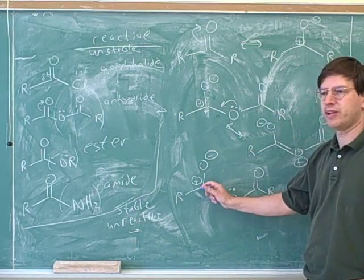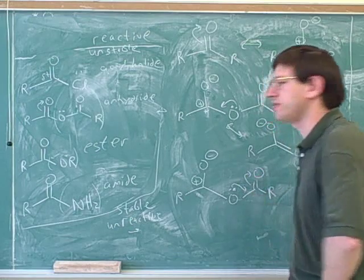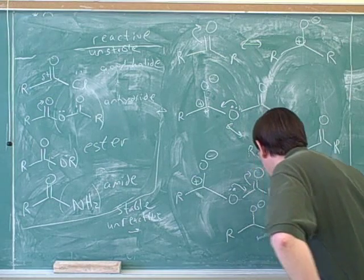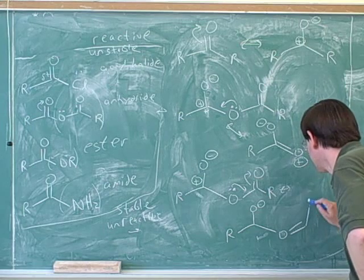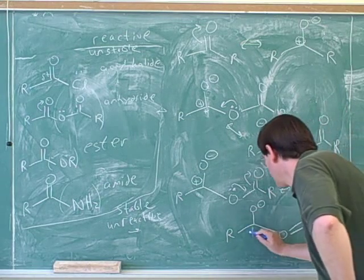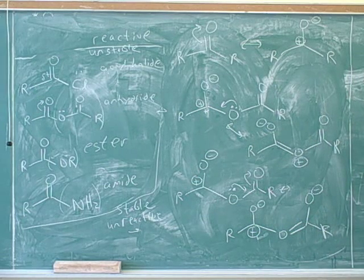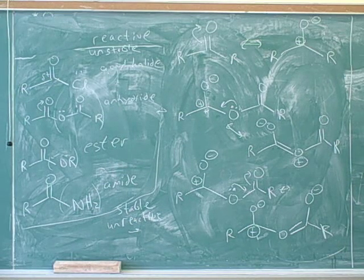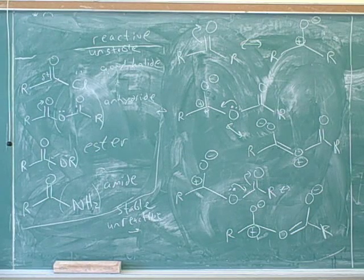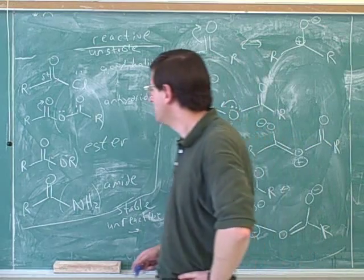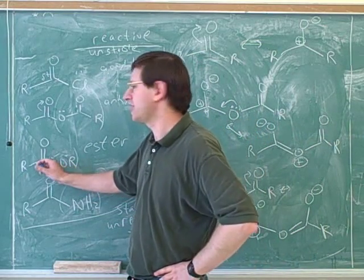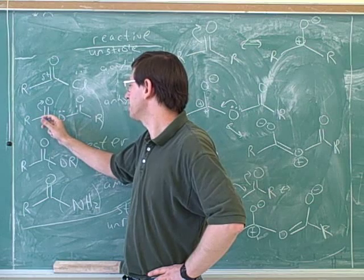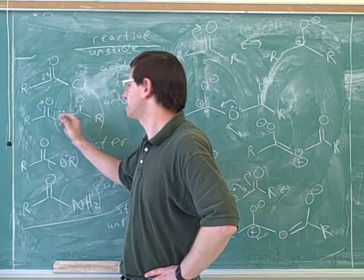So instead of donating electrons to the left to stabilize this positive charge, sometimes the oxygen is going to donate electrons to the right. And that still leaves the positive charge over here. That's basically the explanation for why this oxygen is more effective at stabilizing the carbonyl carbon than this oxygen.